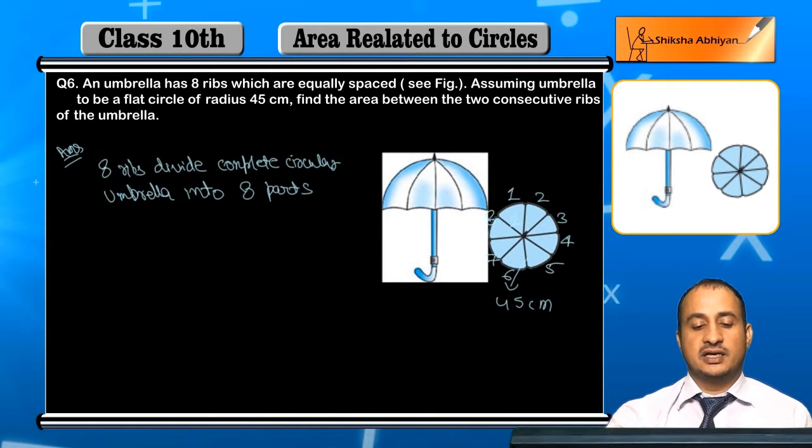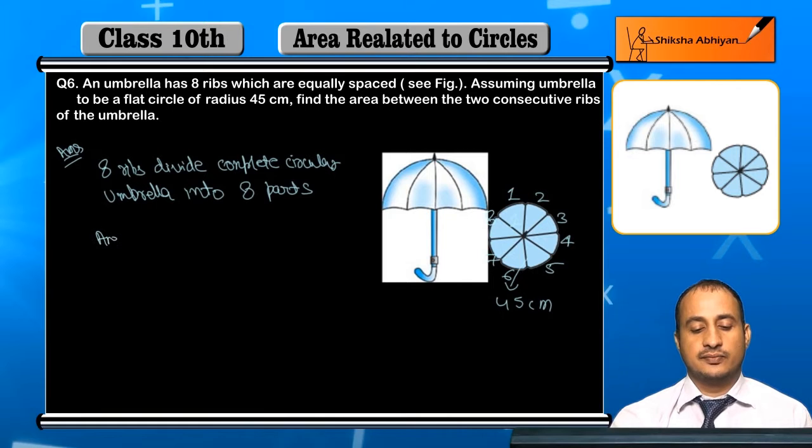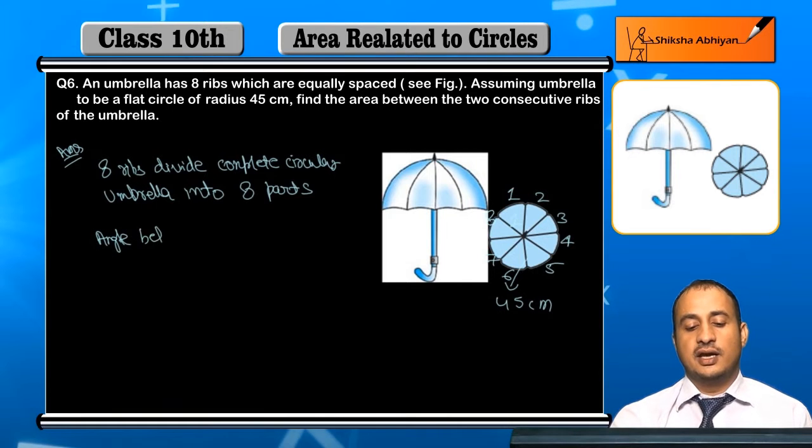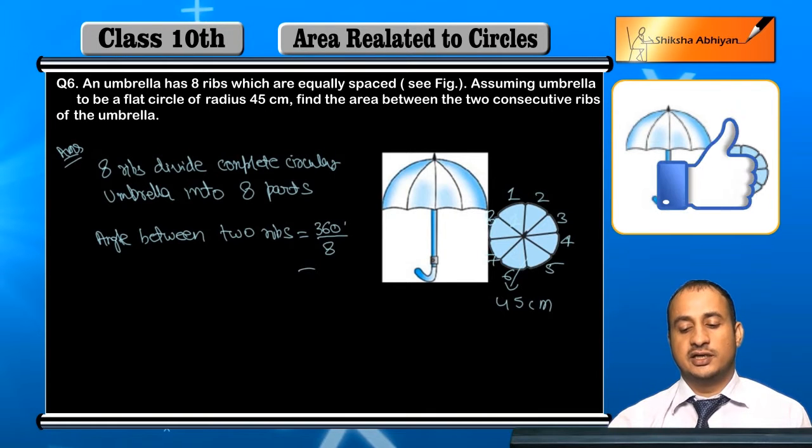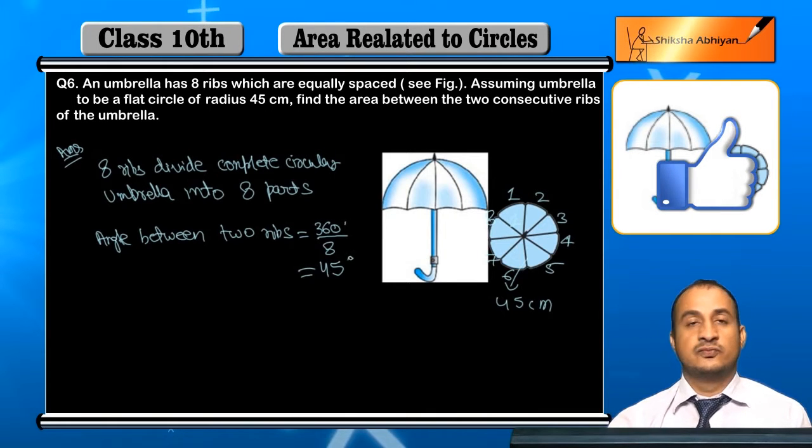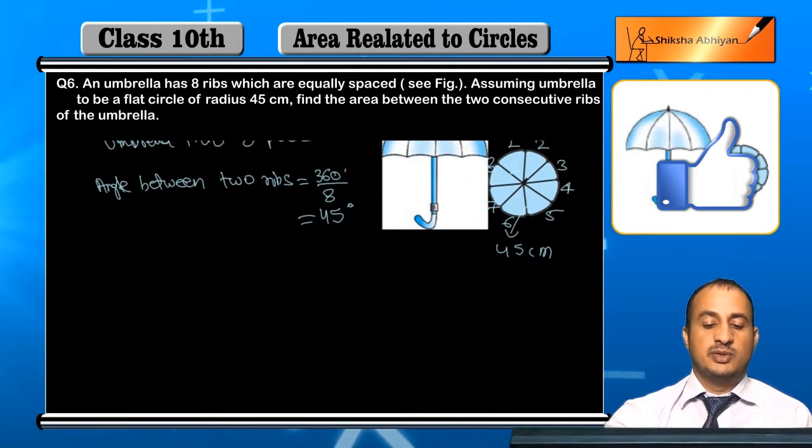Now this is the total angle. What will the total angle be? The angle between the two ribs is 45 degrees. Now area between two ribs.